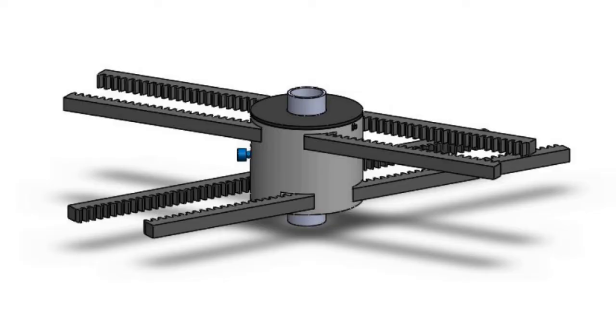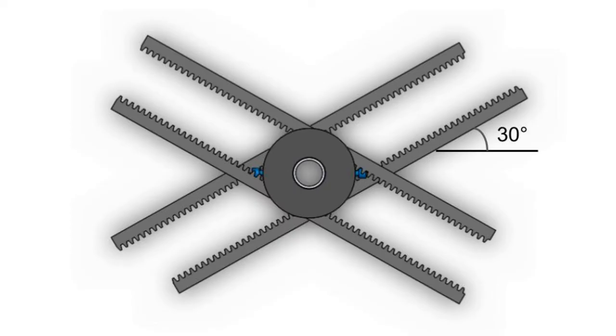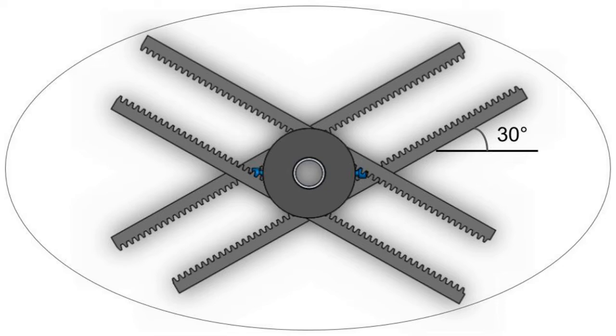After a strenuous process, we finally came to this design. This mechanism would be able to move one full section of the body, for example, the waist measurement. At the end of each rack would be one body panel, which would be able to move in and out. The racks are oriented at 30 degrees from the horizontal to mimic the elliptical shape of the female body cross-section.